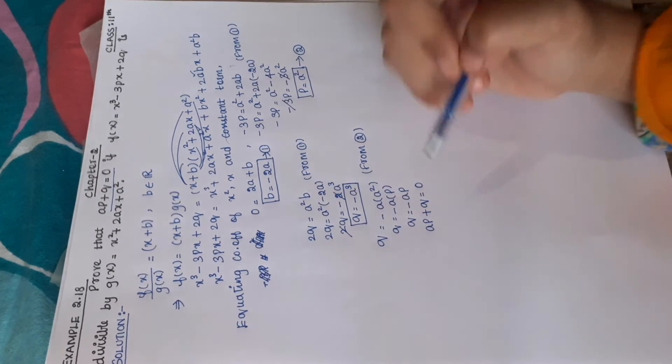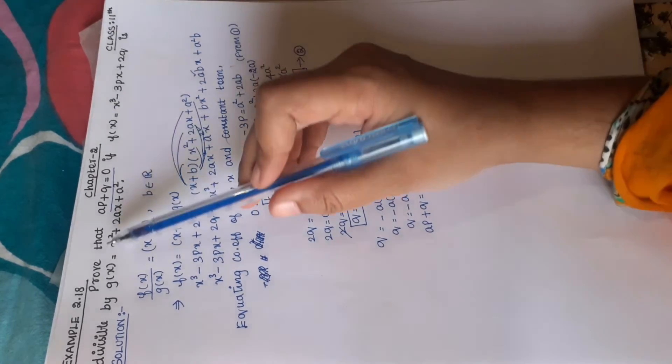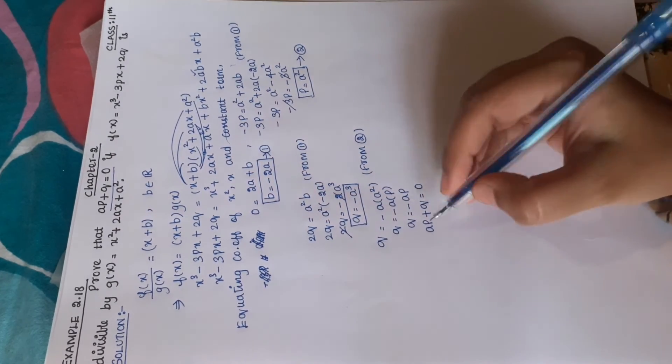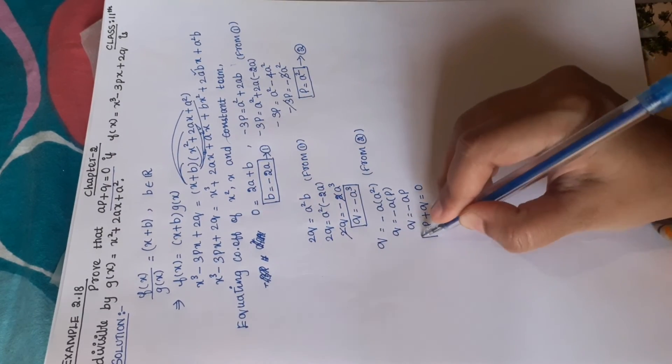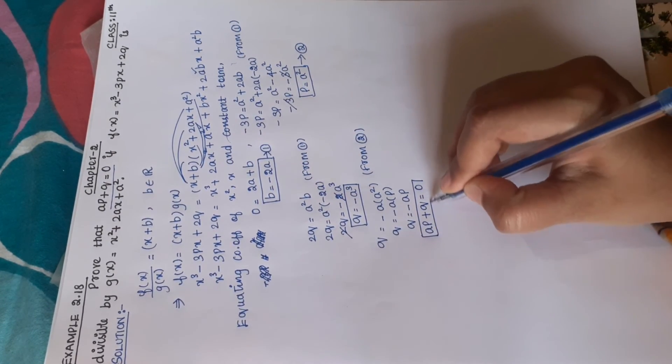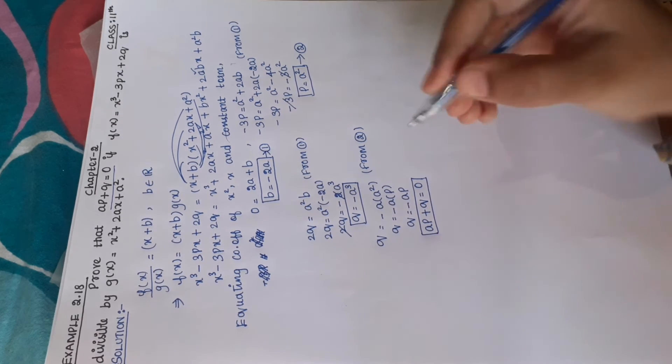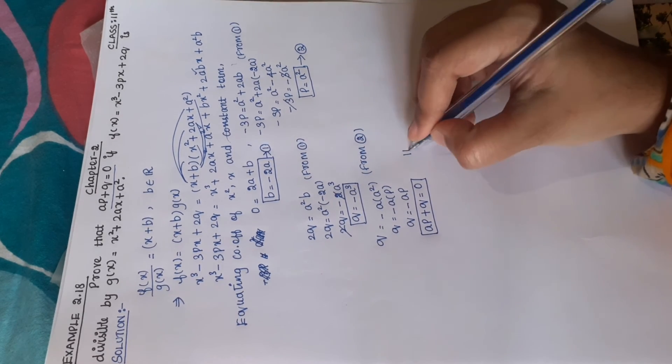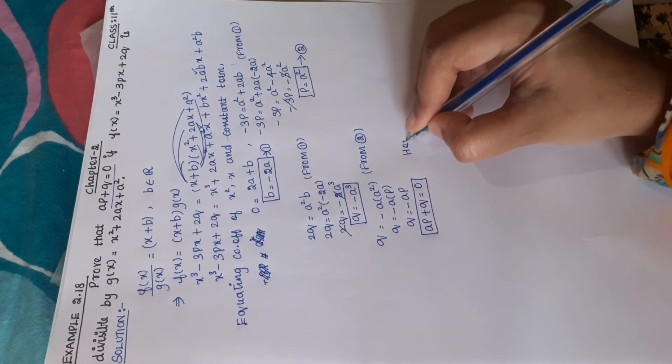So we have proved that ap plus q is equal to zero. That's all.